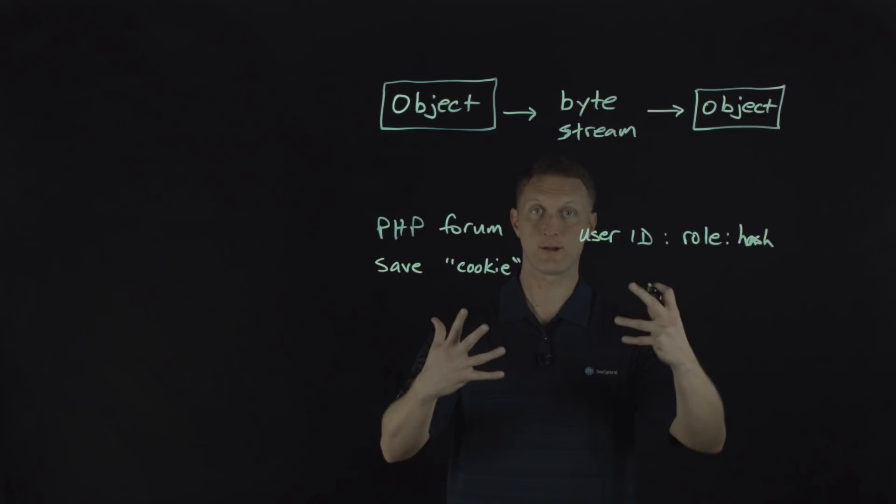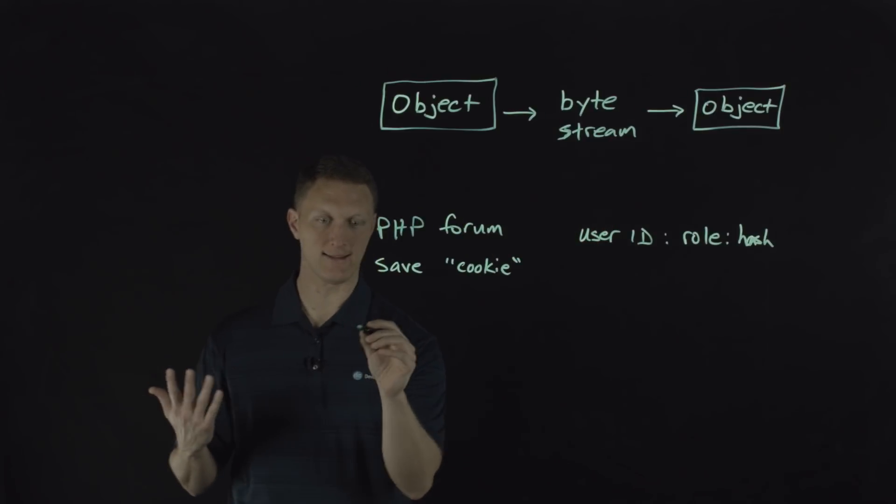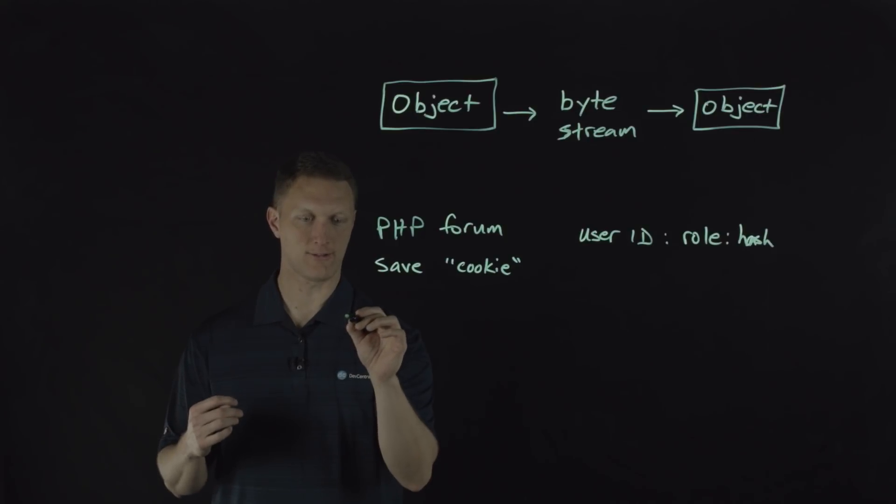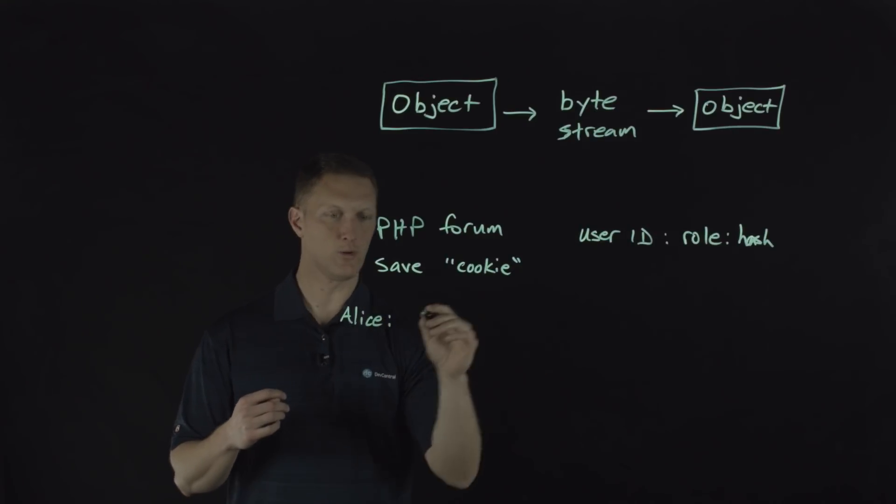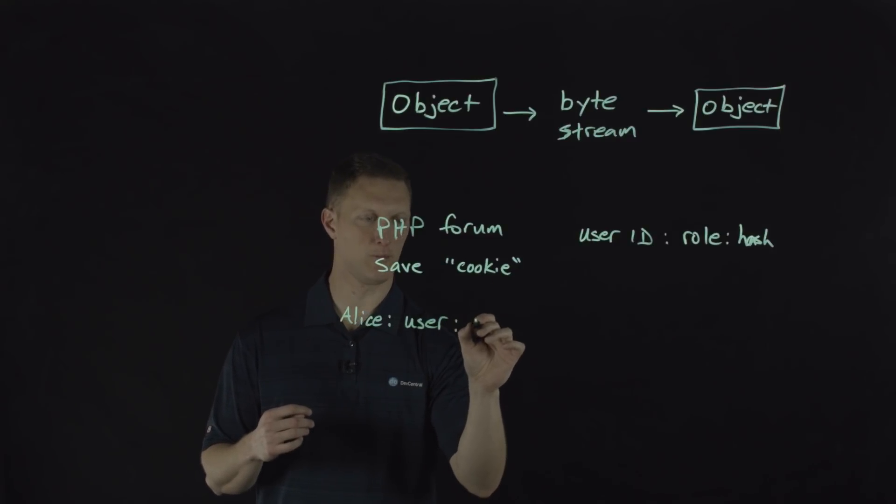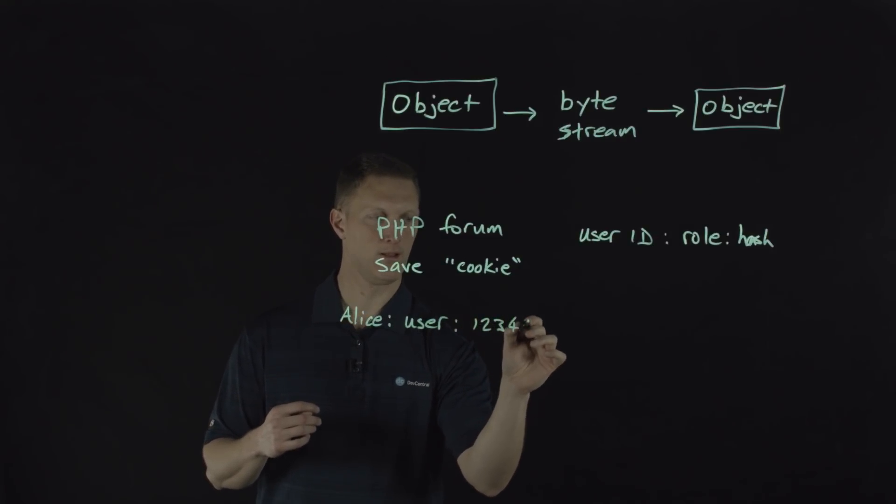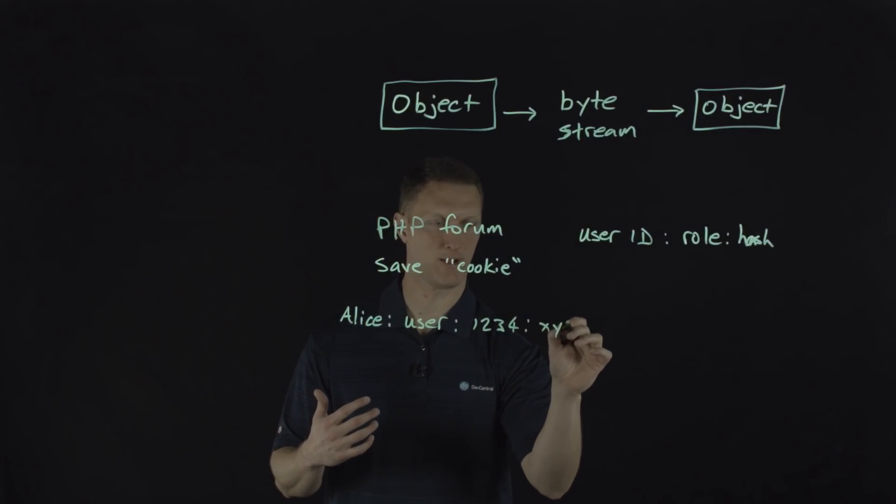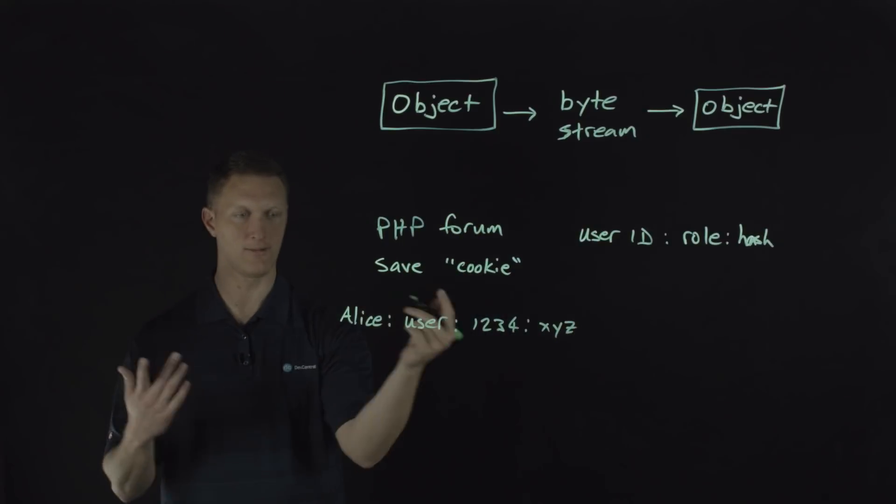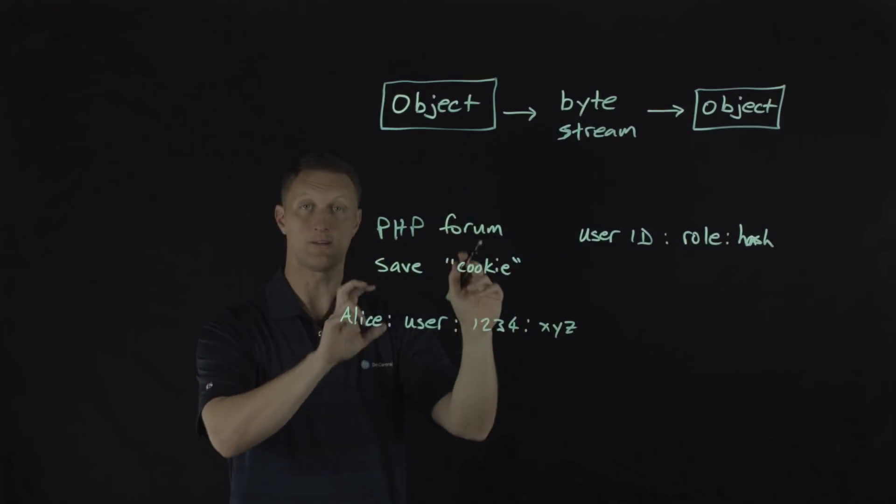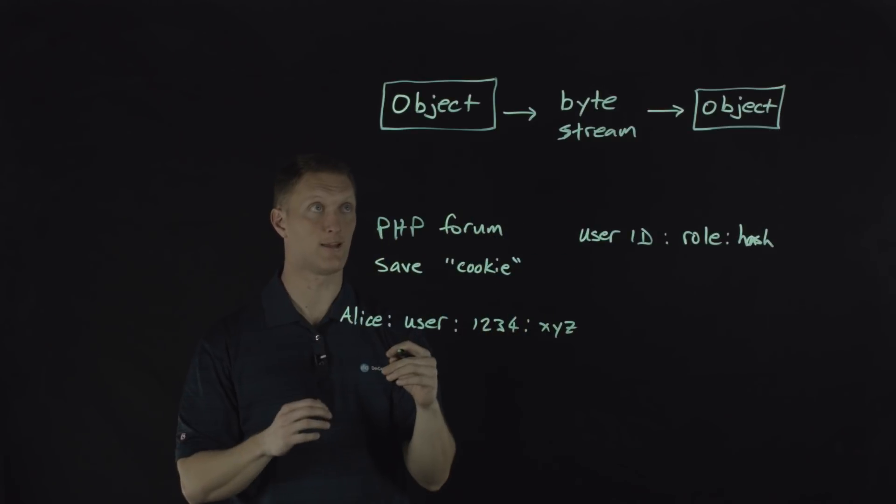All right. So let's say that in a typical scenario, you have Alice who is going to save her cookie here. And so the proper format would be Alice and then her role, let's say is user. And then maybe her password hash is 1234. And then maybe like you save some state type information, that's XYZ, whatever it is. All right. So that's a typical user in this forum. And that's the super cookie as it were object that's saved.